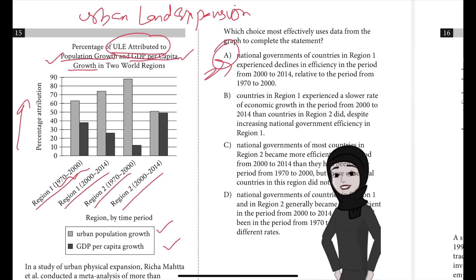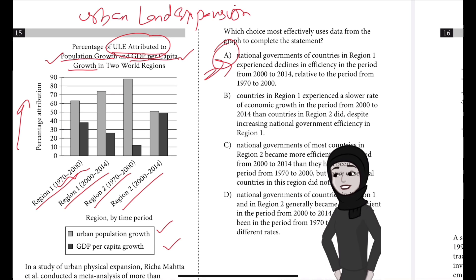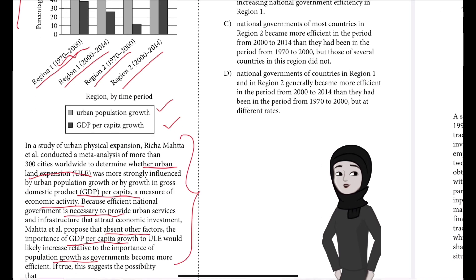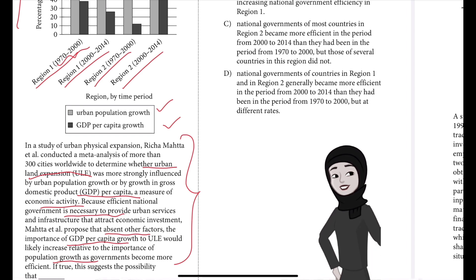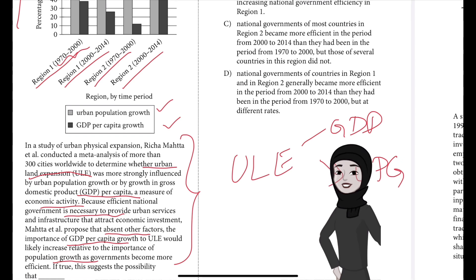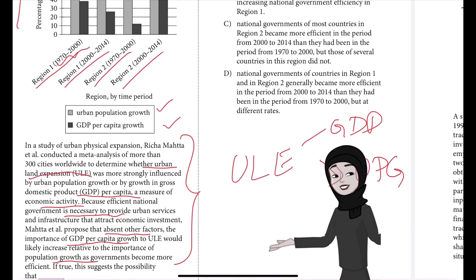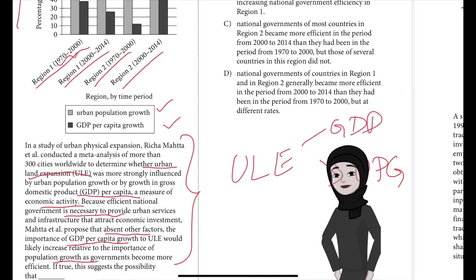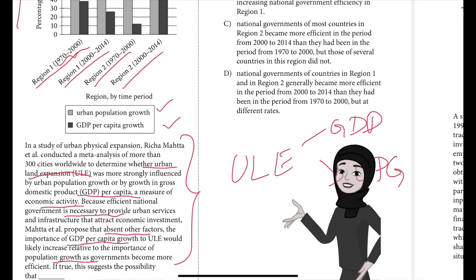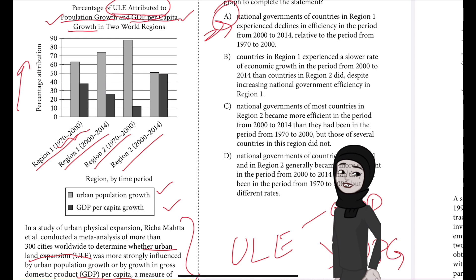We'll go with answer choice A. Choice A is the best answer because it most effectively uses data from the graph to complete the statement about Meta et al.'s proposal regarding factors that affect urban land expansion. According to the text, ULE is influenced by urban population growth and by gross domestic product per capita growth. Meta et al. suggests that as governments become more efficient at providing urban services and infrastructure, GDP growth per capita will account for more ULE and urban population growth will account for less.